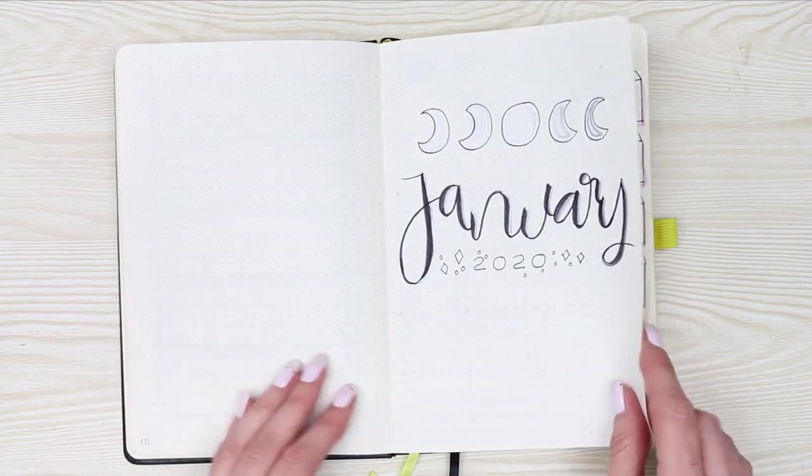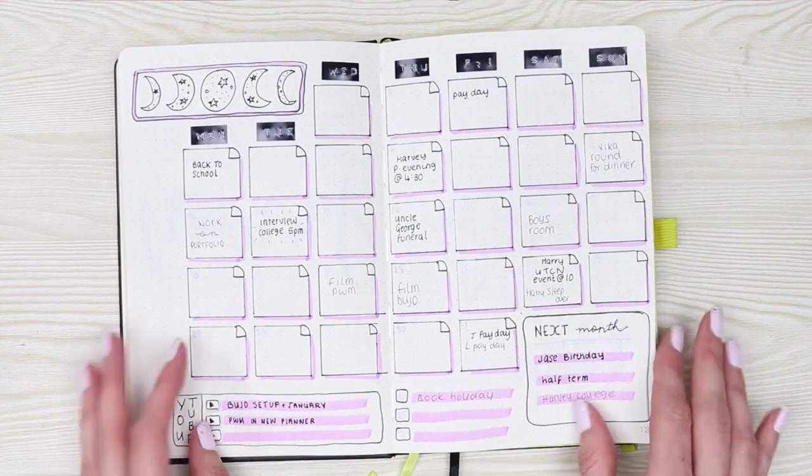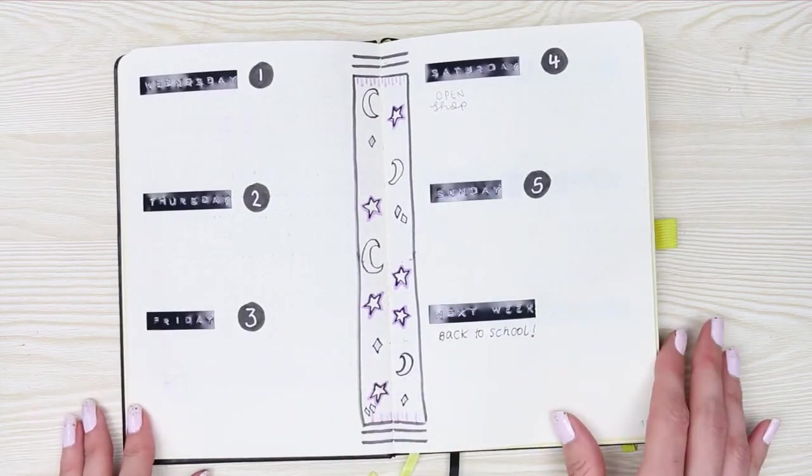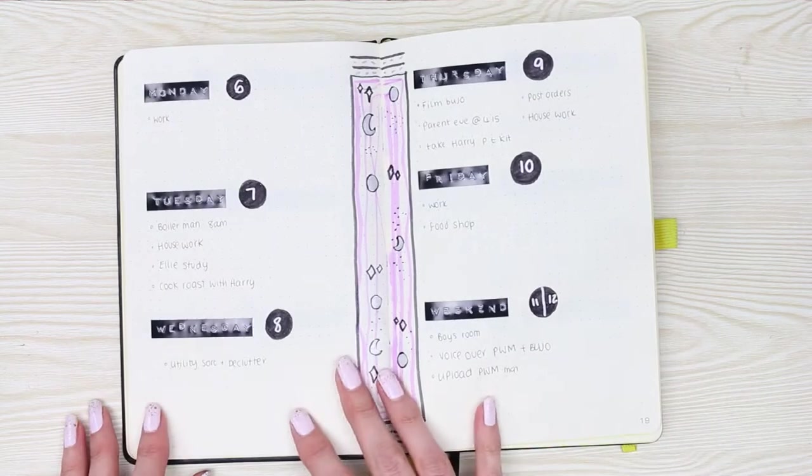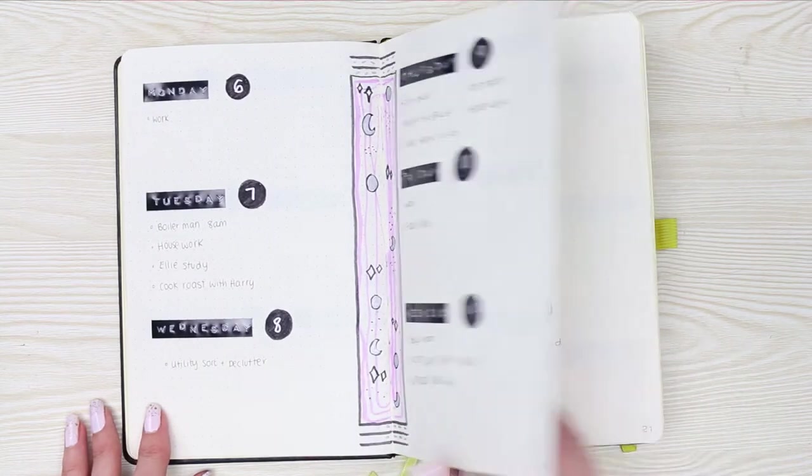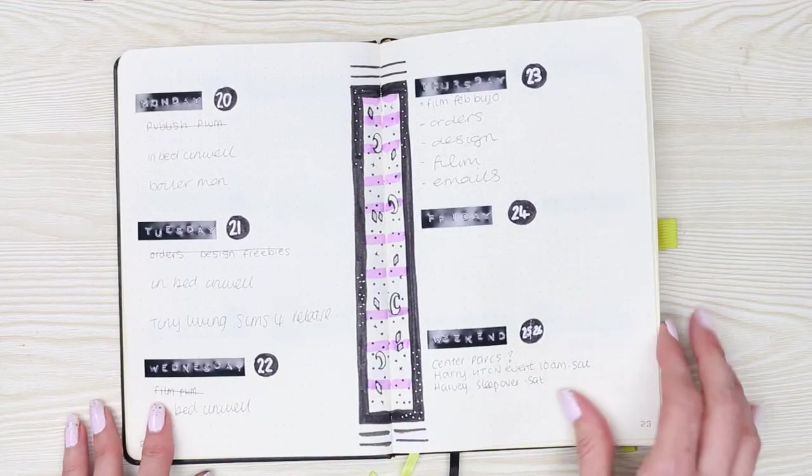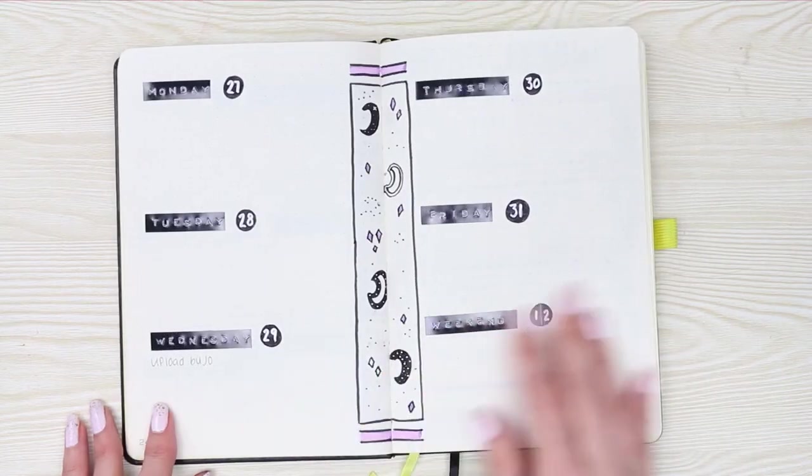For January I went with the theme of moons and stars, I suppose, because it's like a new year. I don't know why I'm trying to justify it. I was just drawn to drawing moons and stars.